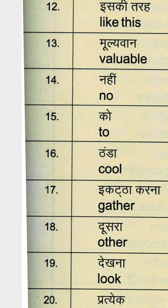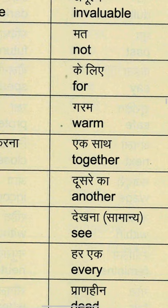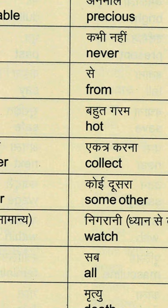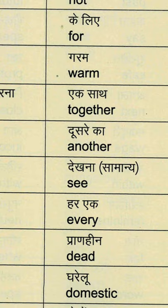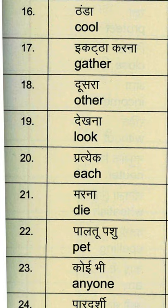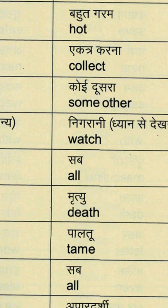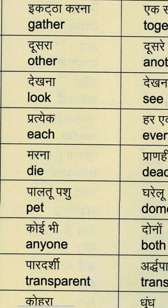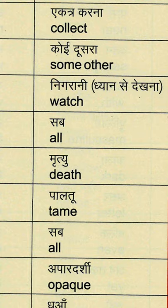नहीं means no. मत means not. कभी नहीं — never — N-E-V-E-R, never means कभी नहीं. Together — साथ में. Collect — इकट्ठा करना. Other — दूसरा. Another — एक और. Some other — कोई और.